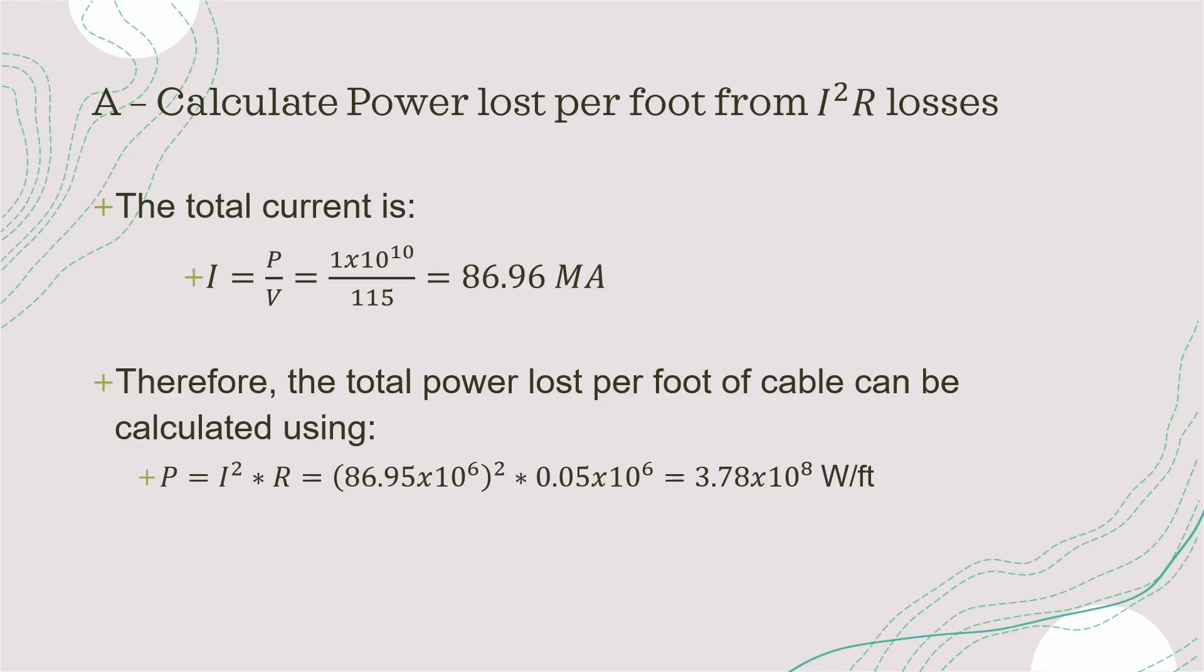P divided by V gives you the current that's required or the current going through the system, which is equal to 86.96 mega amps. That's 10 times 10 to the 6. Using this number we can calculate the I squared R losses.